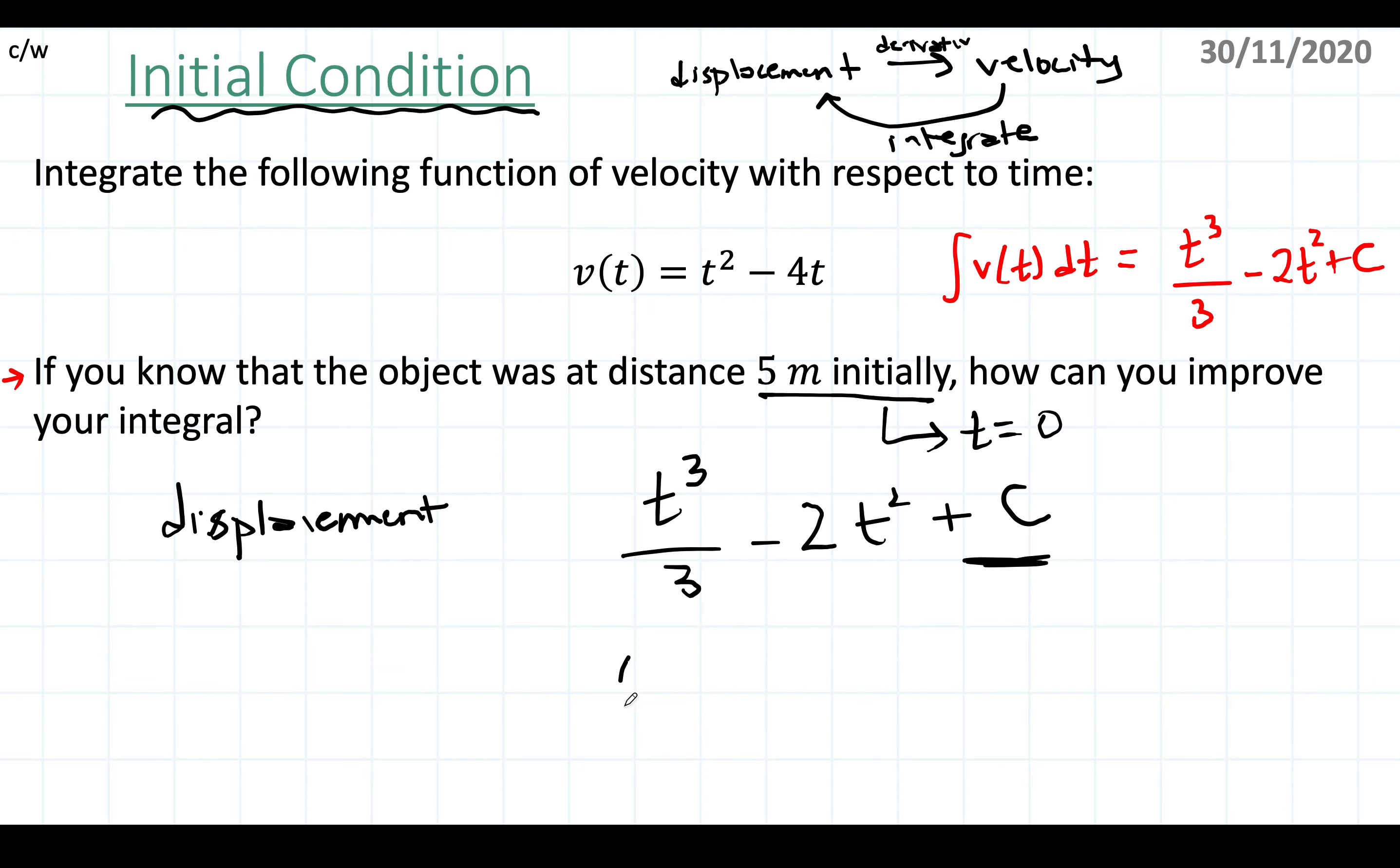But the initial condition is where now I'm going to substitute zero here into my distance function or displacement function, and I know that initially it has to be equal to 5. So that immediately tells me that c is equal to 5 if I solve this.